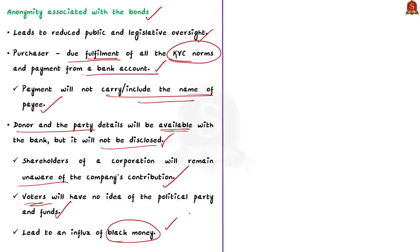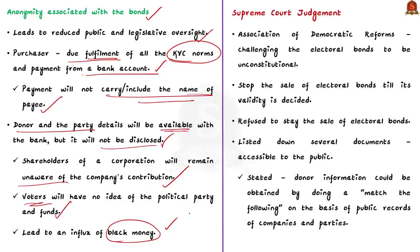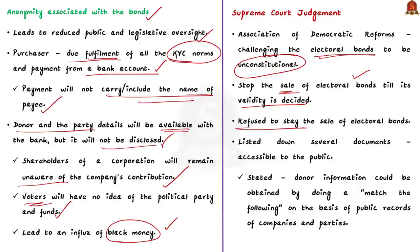The ruling party has an advantageous position because via the State Bank of India it has full account of all donations being made through electoral bonds to itself and to opposition parties. Since neither the purchaser of the bond nor the political party receiving the donation is required to disclose the donor's identity, shareholders of a corporation will remain unaware of the company's contribution, and voters will have no idea of how a political party has been funded. This anonymity could also lead to an influx of black money in the political system. The Association of Democratic Reforms filed a PIL challenging the electoral bonds as unconstitutional and requested to stop the sale of bonds until their validity is decided.